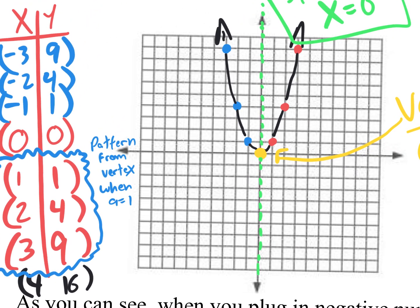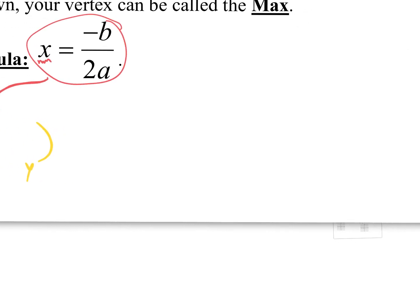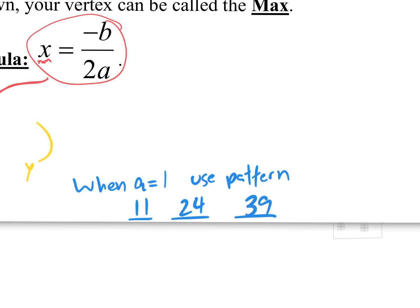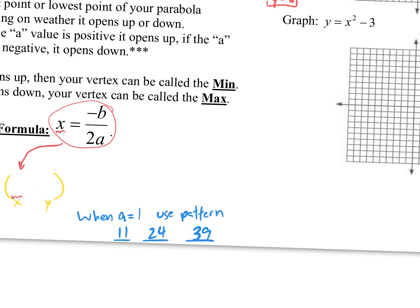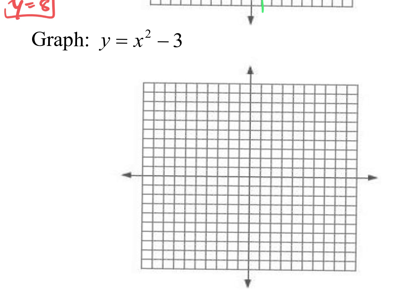Let's go to the bottom part of our worksheet. When a equals 1, use the pattern 1, 1 — 2, 4 — 3, 9. That makes it a lot faster. This bottom example: what's the a value? The a value is 1. What's the b value? There is no b — because there's no x term, the b value is zero. The c value is negative 3. So a equals 1, b equals 0, c equals negative 3.